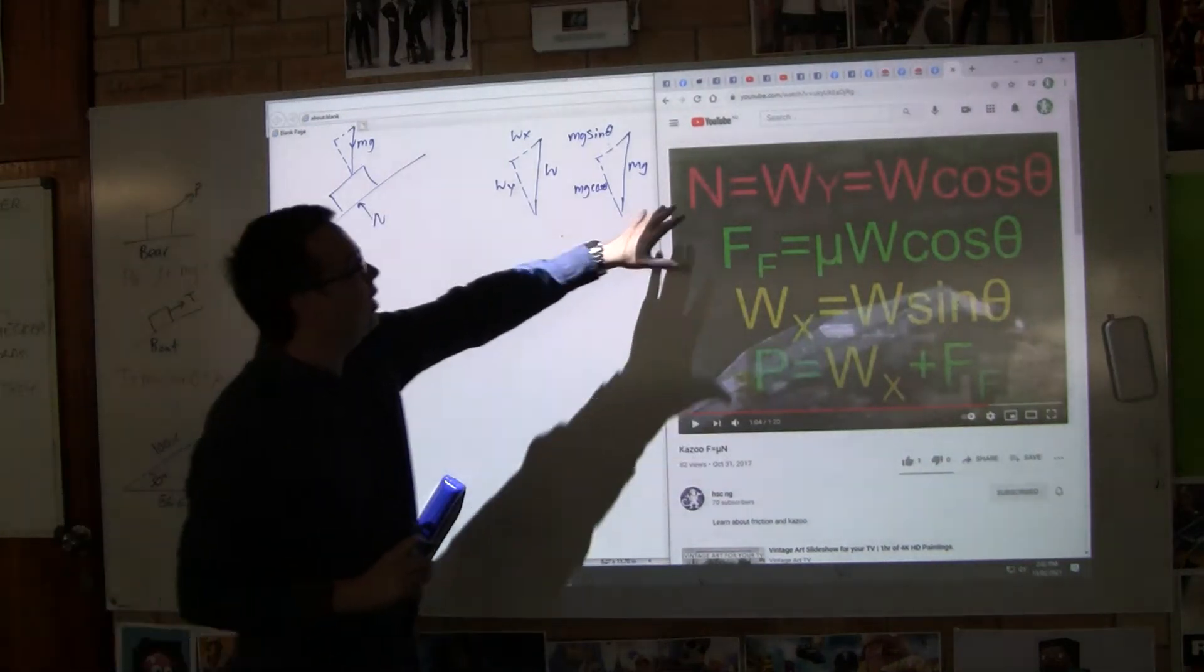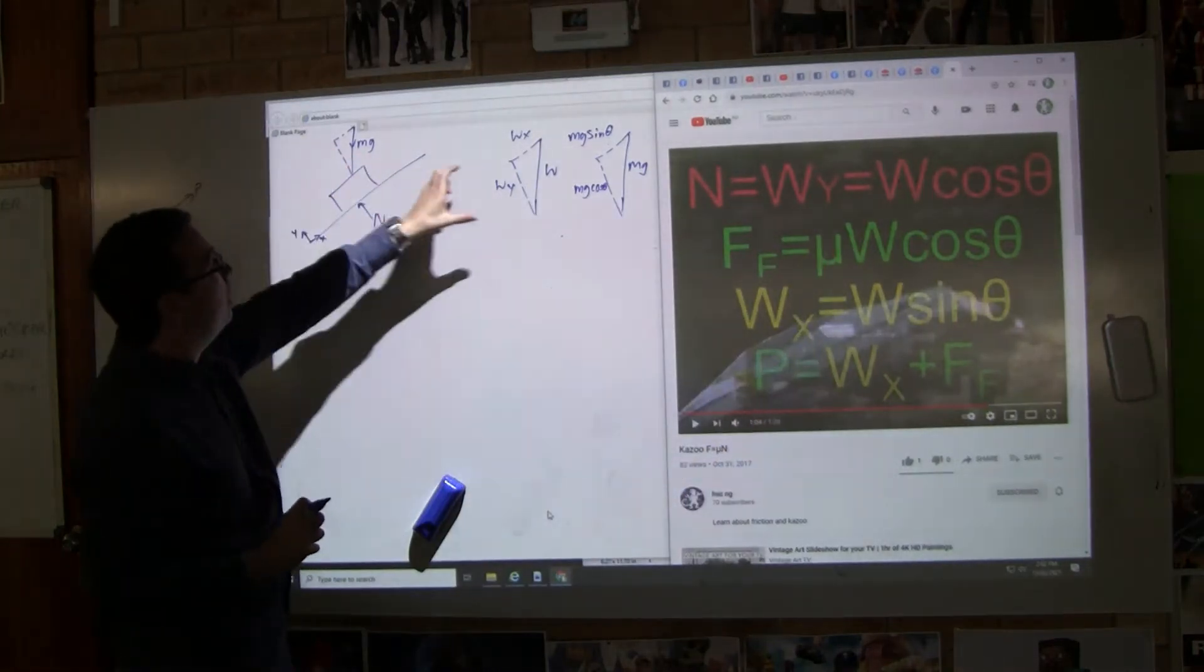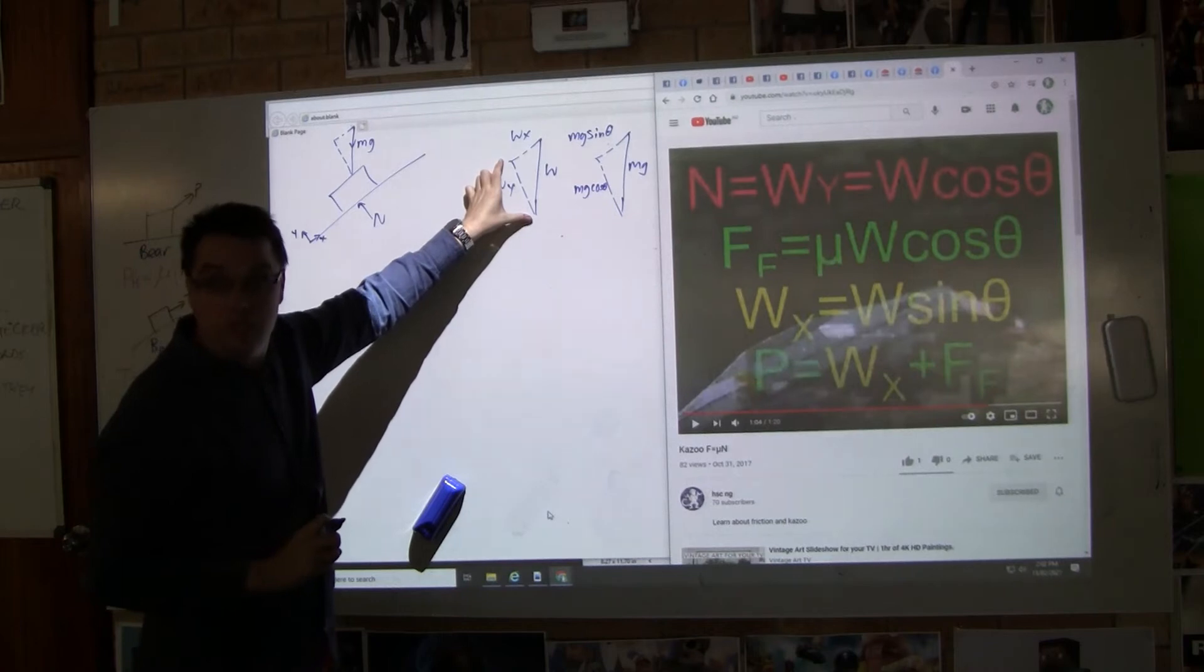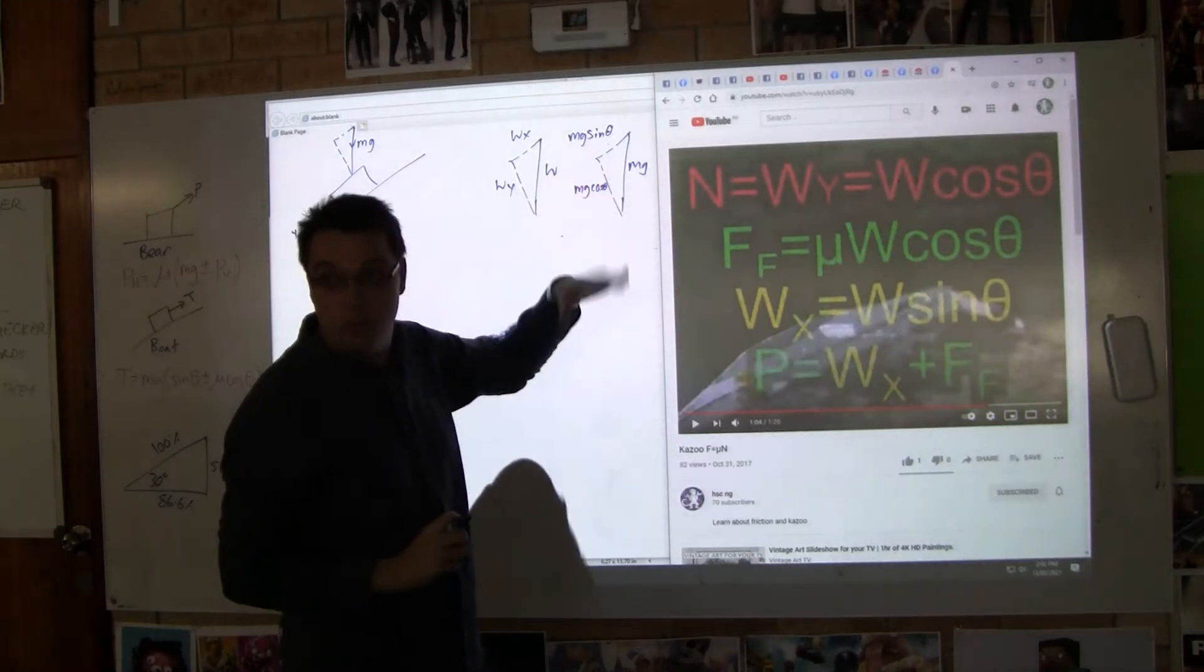So what we can see is that N, the normal reaction, is going to equal Wy, this Wy here. Which we said is W cos theta. We've got that.